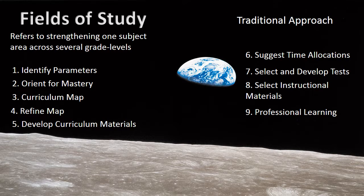When we look at fields of study — a closer view of the curriculum — we focus on one subject area across several grade levels, such as social studies or science across grades 3, 4, and 5. There is a sequential model for improving a field of study involving nine steps. It requires that teachers determine what needs to be changed and what the new field will cover, then solicit buy-in from the rest of the staff — orientation for mastery — because you're going to look at what standards to select.